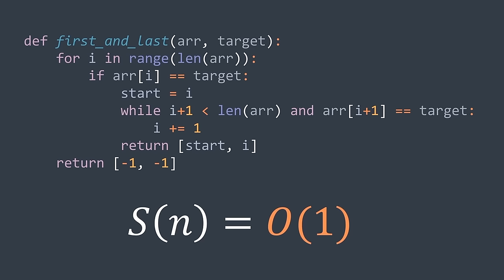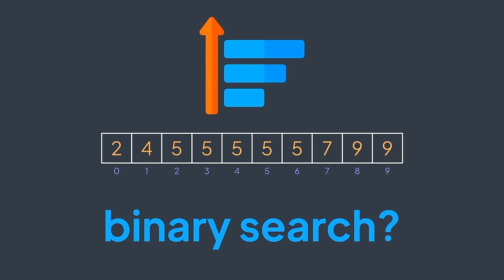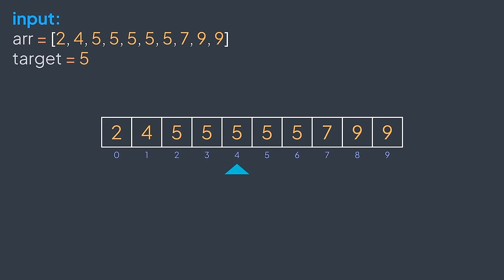This solution uses linear search giving O(n) time complexity. But the array is sorted, so we can think of using binary search. Let's try to find the start position with binary search. We can find the position of an element in a sorted array, but here we're not searching for any position of target — we're searching for the first one. The first position is where r[mid] == target, and also r[mid-1] must be smaller than target.